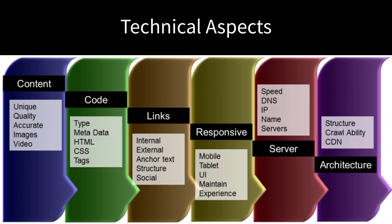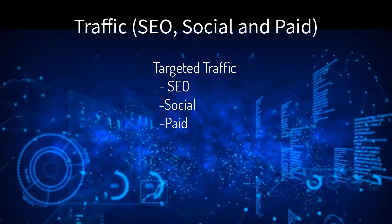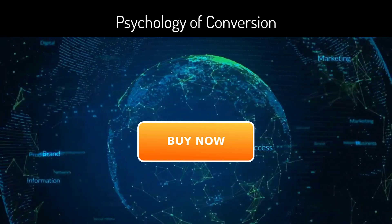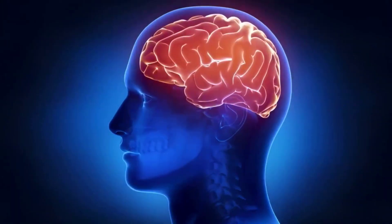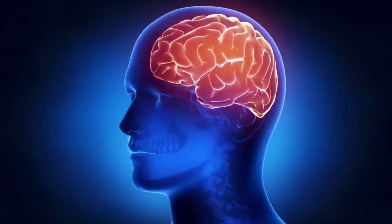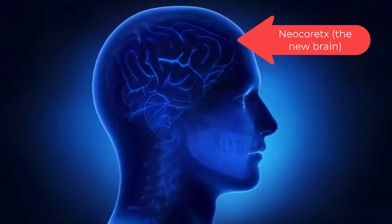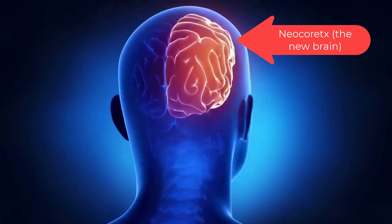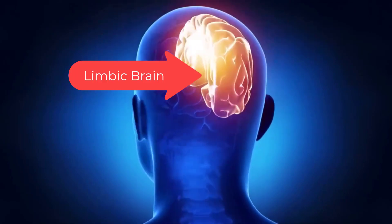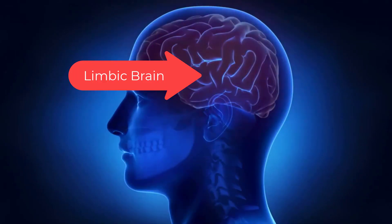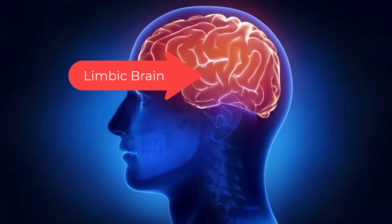All online marketing must have three elements in alignment: the technical aspects — servers, layout, code structure; the traffic — SEO, social, and paid; and the psychology of conversions. Your brain has three basic layers and only one real decision-maker. The neocortex thinks and processes rational data. The limbic brain feels emotions and governs the fight-or-flight instinct.